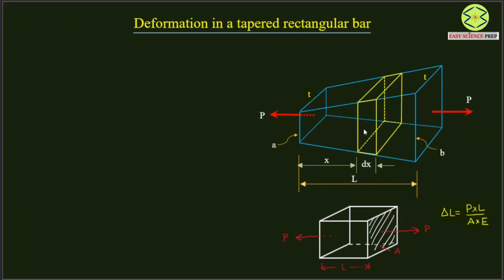Therefore, we consider a thin portion of the bar situated at distance x from the left-hand face of the bar. This thin portion has a very small length dx. For this thin block, the variation of area from one end to the other will not be significant because the length is very small. We can assume that the area of cross-section is uniform throughout this thin block, calling it A suffix x, because it is situated at distance x from the left face.